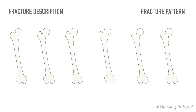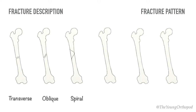Fracture pattern describes the type of fracture line. A transverse fracture is when the fracture line is almost perpendicular to the long axis of the bone. An oblique fracture is when the fracture line makes an acute angle with the long axis of the bone. In a spiral fracture, the fracture line runs spirally in more than one plane.